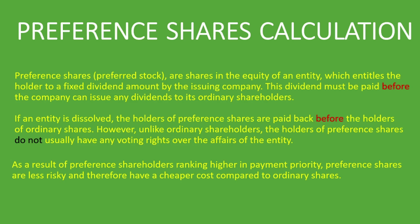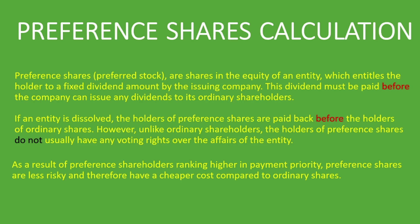As a result of preference shareholders ranking higher in payment priority, preference shares are less risky and therefore have a cheaper cost compared to ordinary shares. Ordinary shareholders take more risk because they get paid last, while preference shareholders get paid every period before ordinary shareholders. That is why you would expect preference shares to cost less than ordinary shares. So let's get into the examples.